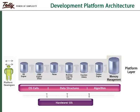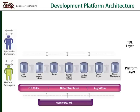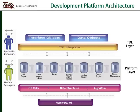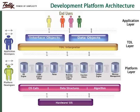All the memory requirements of the application are handled by memory management. Above the platform layer lies the TDL layer, which comprises the TDL language consisting of interface objects and data objects and the translator, technically known as the interpreter layer. The TDL interpreter validates each line and throws an error message when an error is encountered in the TDL code. The topmost layer is the application layer — the user interface through which the end user interacts with the product.